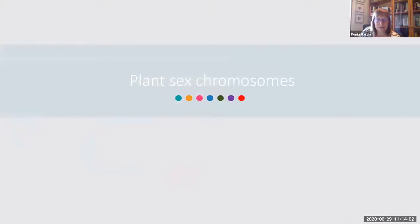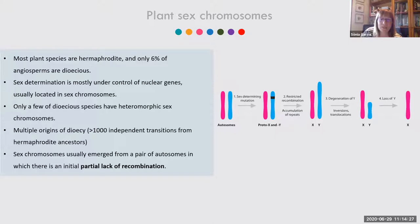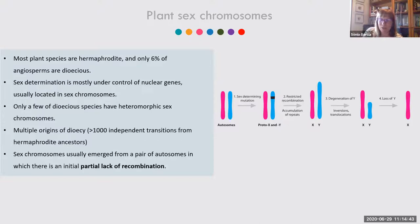Now we'll briefly discuss plant sex chromosomes. It is well known that most plant species are hermaphroditic, contrary to animals — only 6% of angiosperms are dioecious. Sex determination is mostly under control of nuclear genes usually located on sex chromosomes. Only a few dioecious species have sex chromosomes easily distinguishable by microscopy — a large X and small Y — but many more dioecious species have homomorphic sex chromosomes of approximately the same size.